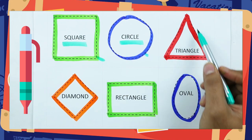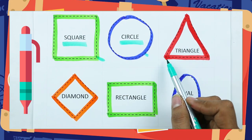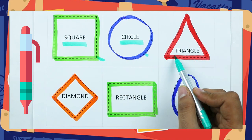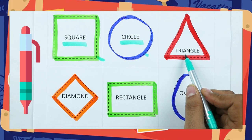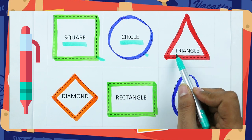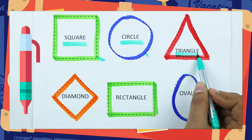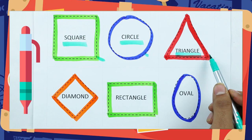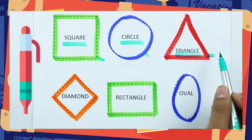Which shape is this? Triangle. T-R-I-A-N-G-L-E. It's a triangle, with red color.